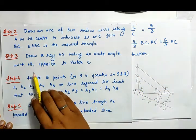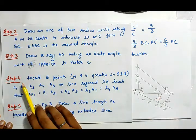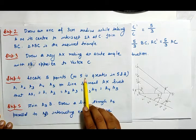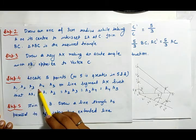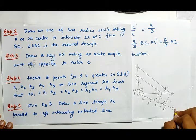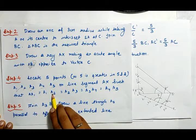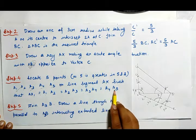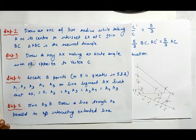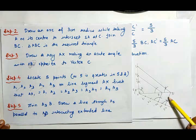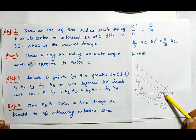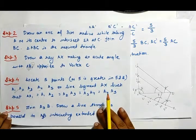Step 3: draw a ray AX making an acute angle with AB opposite to vertex C. Step 4: locate 5 points — since 5 is greater than 3 — A1, A2, A3, A4, A5 on line segment AX, such that AA1 equals A1A2 equals A2A3 equals A3A4 equals A4A5. Step 5: join A3B, then draw a line through A5 parallel to A3B intersecting the extended line segment.